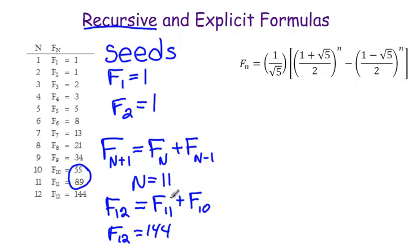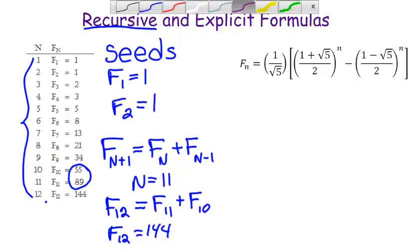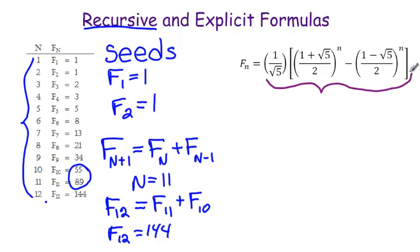Now the problem with this recursive formula is that in order to figure out the 12th Fibonacci number, you have to know all the preceding Fibonacci numbers. Now let's look at this explicit formula. This looks a little scary, but I think you can deal with it. In your textbook, it shows you a simplified version that if you round off your answer from the calculator, you will get the correct Fibonacci number and you're allowed to use that on your test, but I'm not going to explain it in the video.